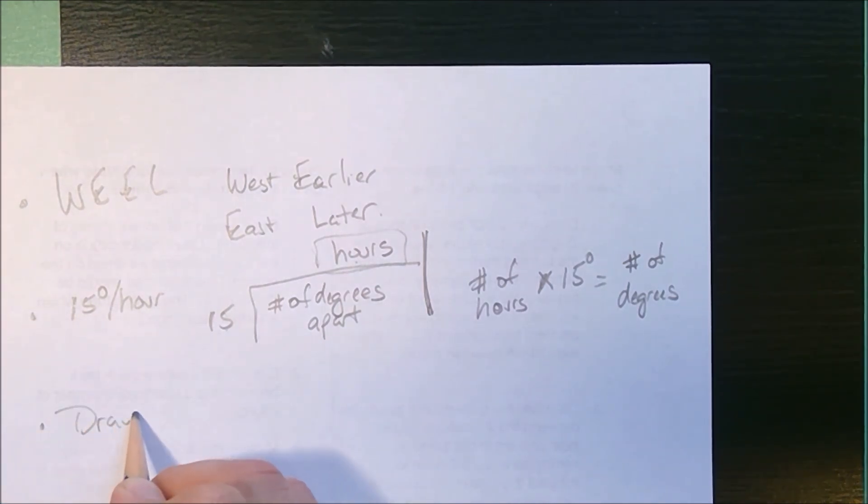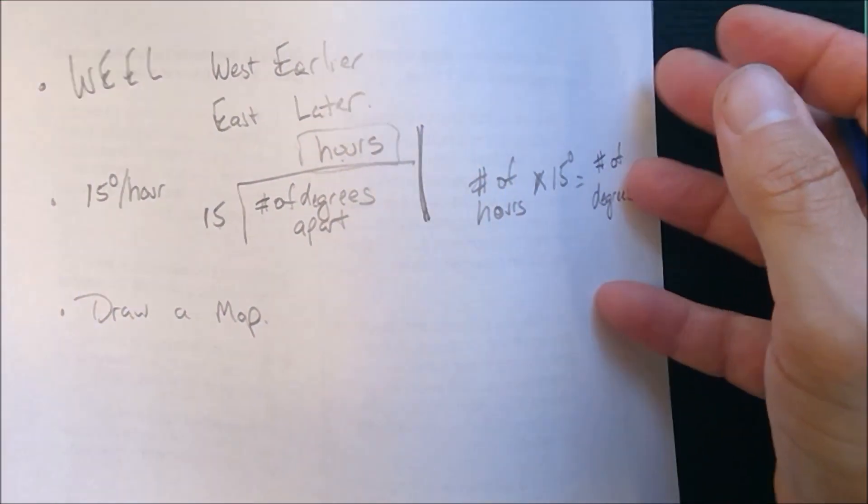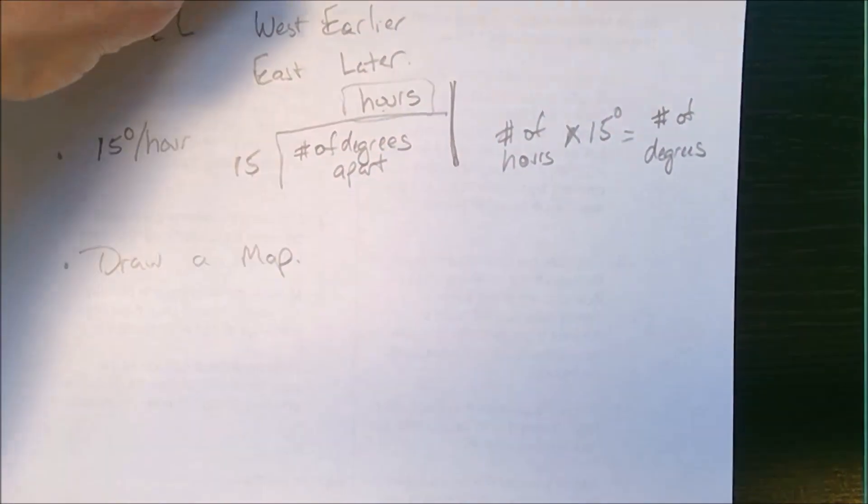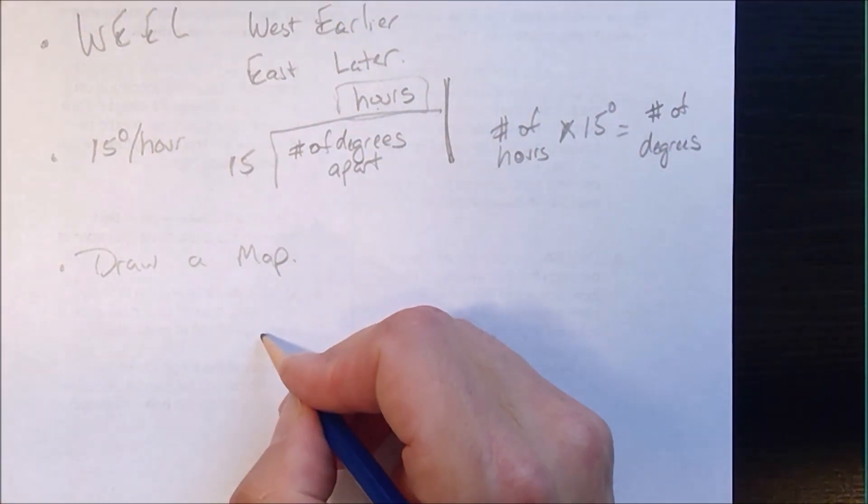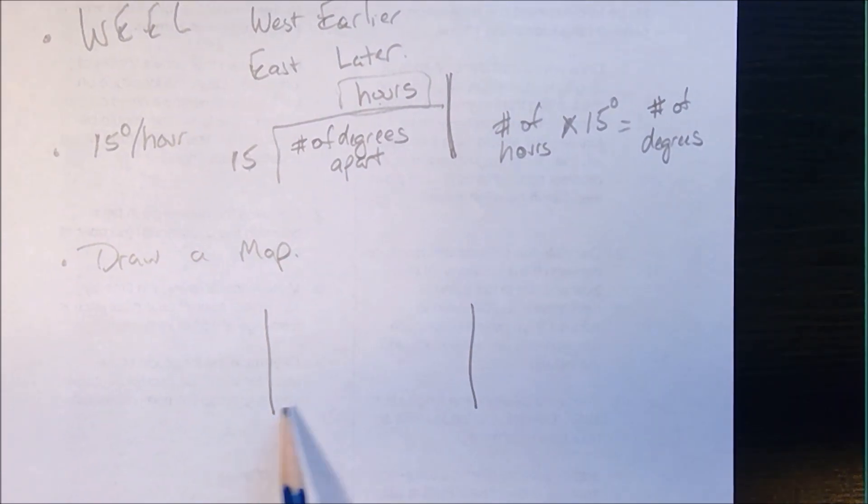Now I always like to draw a map. It's the world's simplest map - it's a model. Models help us represent and see things. I'm going to draw two vertical lines. Each one is a meridian of longitude.